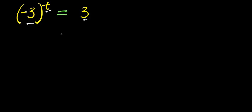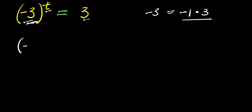Now in this first method, I'm going to rewrite this negative 3. I have negative 3, and this equals negative 1 times 3. So I will then replace this negative 3 here with negative 1 times 3. So I have negative 1 times 3, raised to the power of t, and this equals 3.